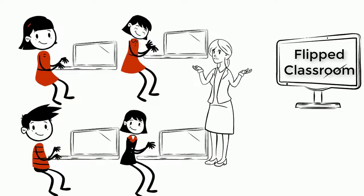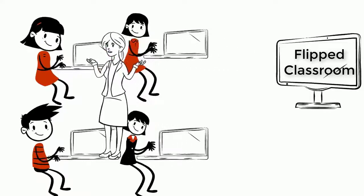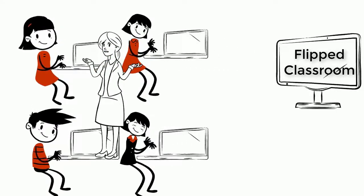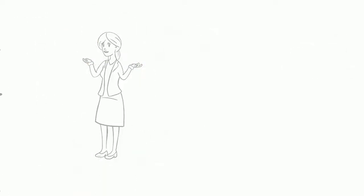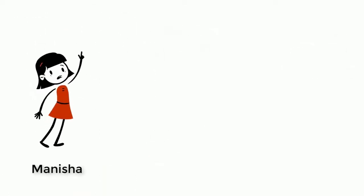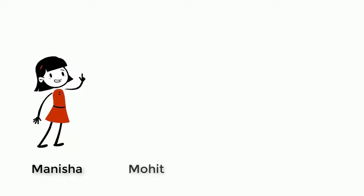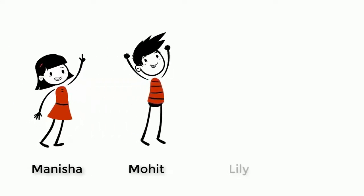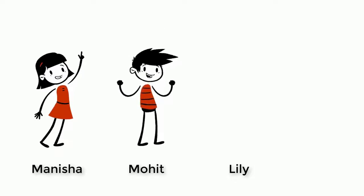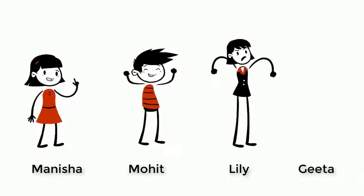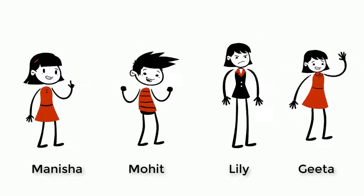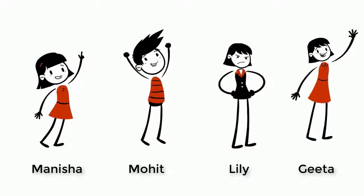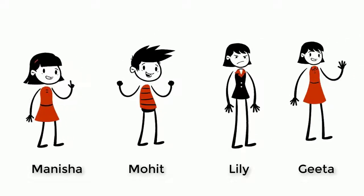So, instead of standing in front of the whiteboard and speaking all the time, Miss Ishu needs to move around the classroom. She could motivate Manisha to work collaboratively with other learners, push Mohit further with some more challenging work, help Lili with the material that she still finds difficult, and motivate Gita as she tries to watch a part of the video for further learning.